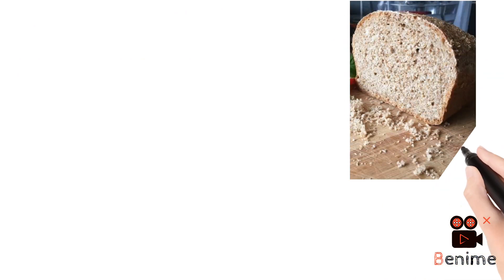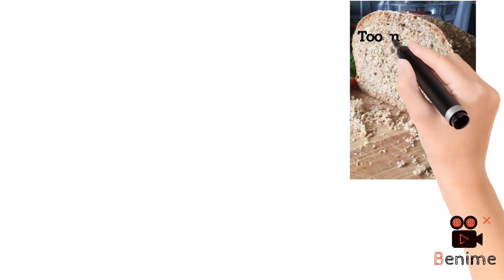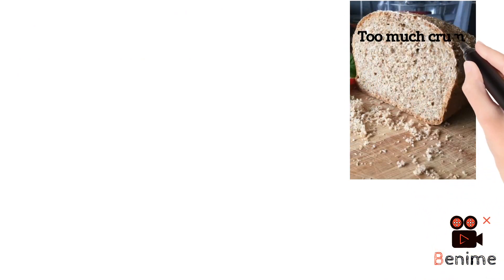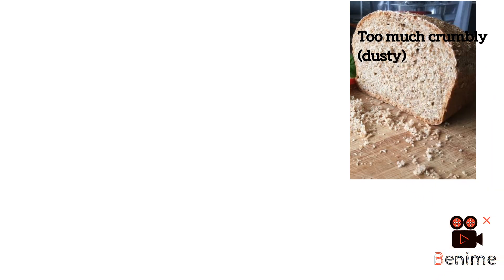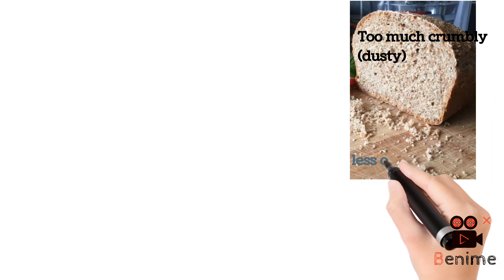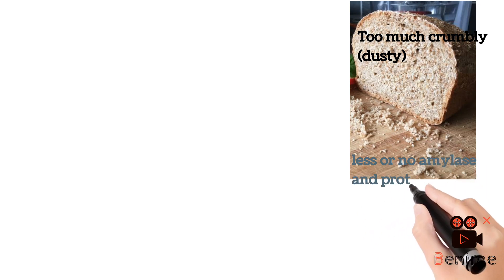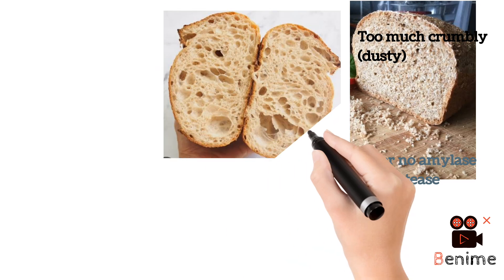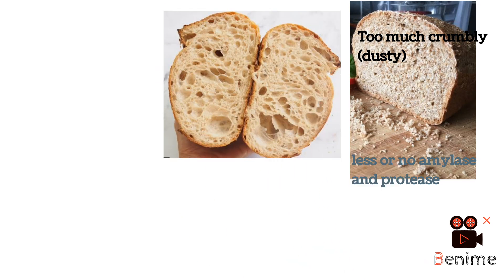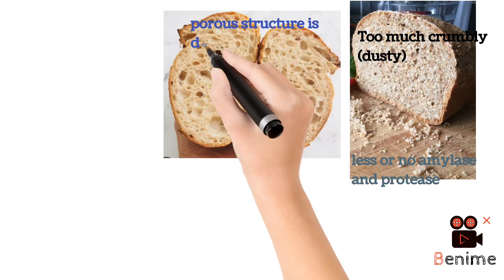Sometimes you observe that your bread is dusty on the inner side with no air space or poor structure. This is caused when little or no amylase and protease are applied. Therefore, amylase and protease prevent your bread from being dusty or too crumbly.